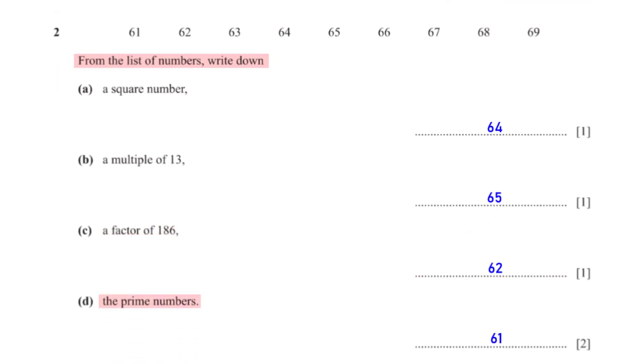Write down the prime numbers. From the list, 61 is a prime number — it has only two factors: one and itself.